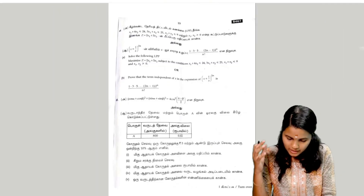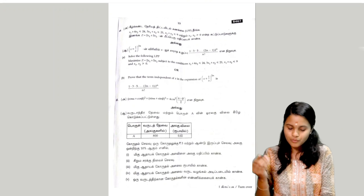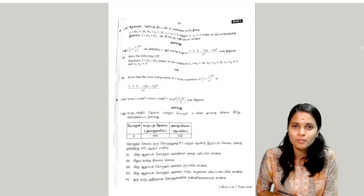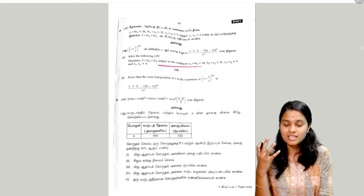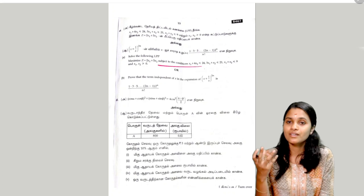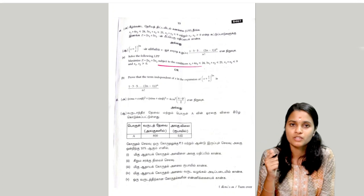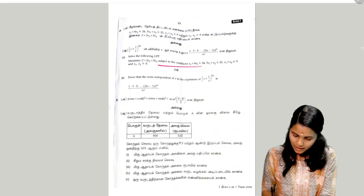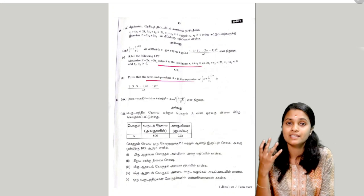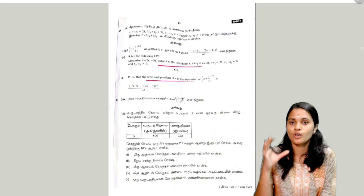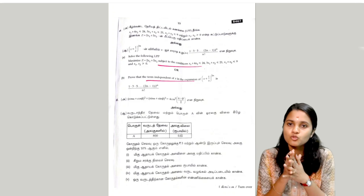The next question is the 44th: this is a very easy question. Maximize subject to the constraint — LPP problem with given values. The next question: the term independent in the binomial expansion — just prove it from the question.